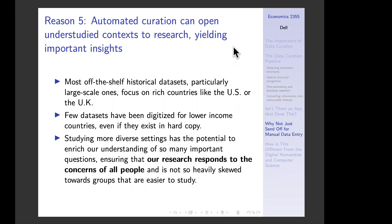Reason number five, which is related: automated curation can open understudied contexts to research. Most off-the-shelf historical datasets focus on rich countries like the US or UK, and few datasets have been digitized for lower-income countries or countries outside the US and Europe, even if they exist in hard copy. Studying more diverse settings has the potential to enrich our understanding of many important questions and ensure that our research responds to the concerns of all people, not just those in higher-resource settings.